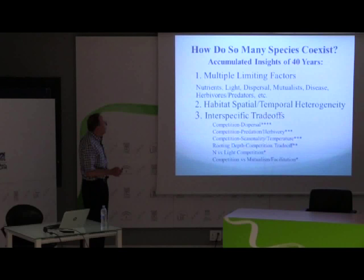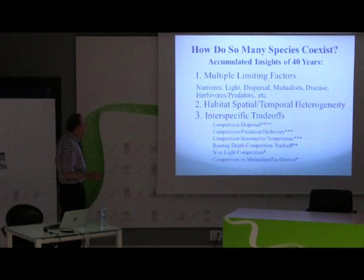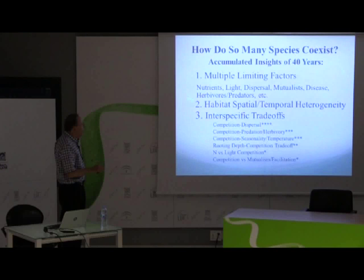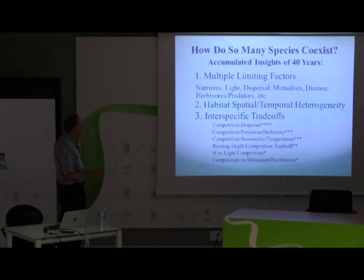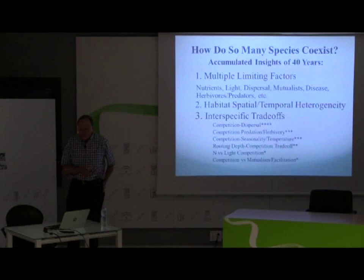I want to give you a quick summary of what I would have certainly learned. First of all, so many species interact and coexist with each other because there are many things that limit them — multiple limiting factors. They live in habitats that are not the same from point to point, so they differ in space and in time. But those two things cannot explain diversity. If there are limiting factors and heterogeneity, there can be many species coexisting if there's also one more thing: interspecific trade-offs.